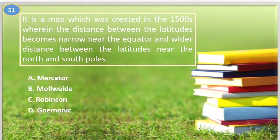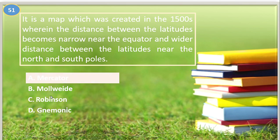Number fifty-one. It is a map created in the 1500s wherein the distance between the latitudes becomes narrow near the equator and the distance becomes wider near the north and south poles: A. Mercator, B. Mollweide, C. Robinson, D. Mnemonic. The answer is A, Mercator.